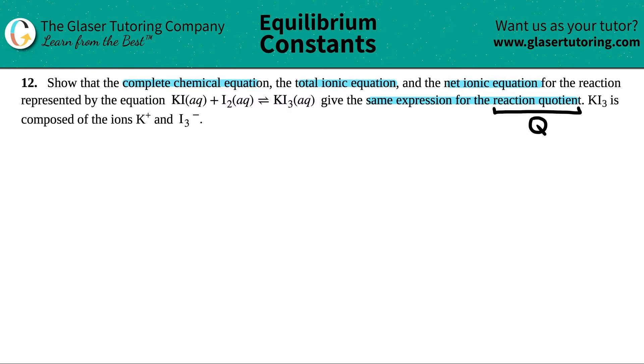So first thing is, let's figure out what the complete chemical equation is. And that's the one that's given right here. So maybe I'll say the complete equation would just be what is written. So, KI aqueous plus I2 aqueous will be at equilibrium with KI3. Remember, the complete chemical equation, there is no breaking down.